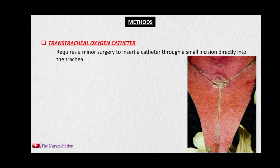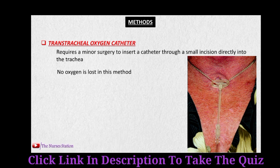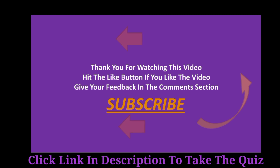The next method is the transtracheal oxygen catheter. This requires a minor surgery to make a small incision through which the catheter is directly inserted into the trachea. This prevents the loss of oxygen into the environment because the catheter is placed directly into the trachea, and all of the oxygen delivered through the catheter goes into the trachea. That was all about today's topic.